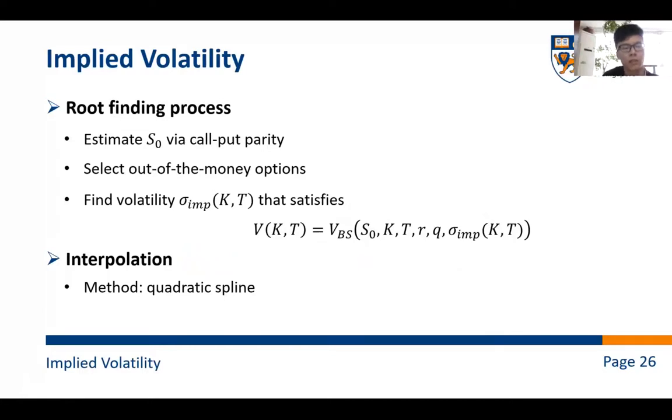And next, we're going to talk about the implied volatility. The implied volatility can be computed by a root-finding process where we make the market price equal to the theoretical Black-Scholes price. So in the calculation, firstly, we have to calculate the S0 via put-call parity. And then we have to also select the out-of-money options in the calculation. And then we can solve this equation by a root-solver, and then we can obtain some grid points. And then we have to do the interpolation among these grid points to get an implied volatility surface. And we take the quadratic spline method in the interpolation.